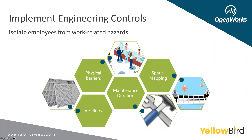Another engineering control is air filters and the HVAC system itself. How often are we changing our air filters? We may be required in this post-COVID world to change filters more often than the manufacturer previously stated. The duration of our maintenance schedules may increase — previously quarterly, now possibly every 60 days. In addition, spatial mapping and social distancing are elements of implementing engineering controls.